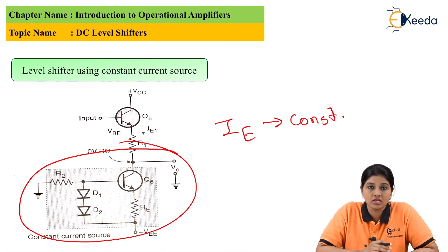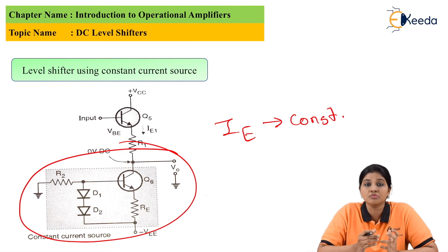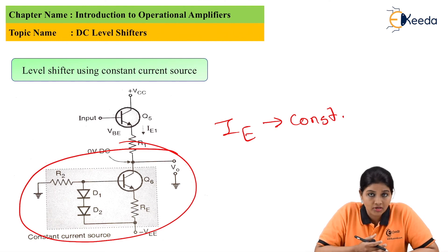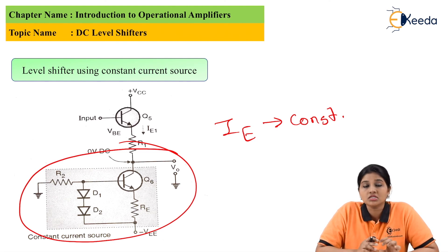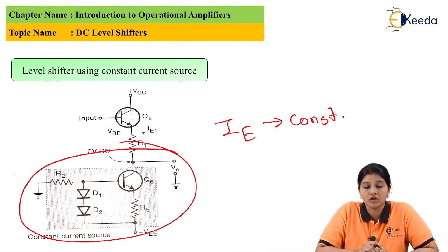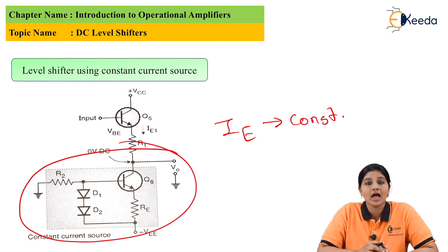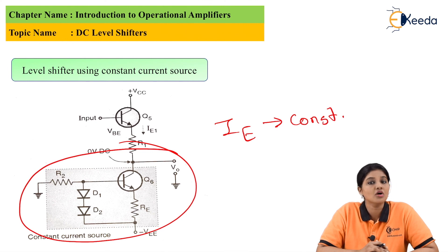So this is what DC level shifters are — circuits which can be implemented using transistors in a simple voltage follower configuration, using an avalanche diode, or using a current mirror or constant current source circuit. The shifters are required to bring the DC level back to zero, which gets shifted due to intermediate coupling between the first two stages of the operational amplifier. So I hope you understood this topic. Thank you very much for watching this video. Stay tuned to Ekeeda. Thank you.